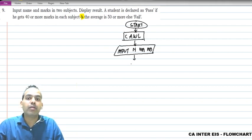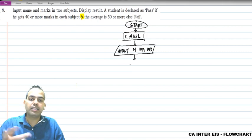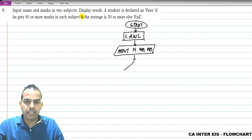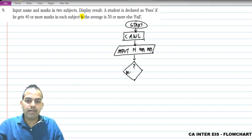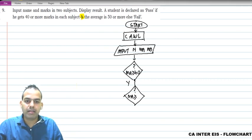Now what we will do - we need 40 marks in each subject, then only you are passed. So let's have this time I'll make it little different so that you can understand, it can be made in n number of ways. So let's have MA greater than or is equal to 40. If answer is yes, then only you should check another one, otherwise the student directly fails.